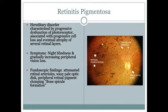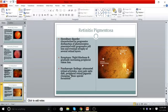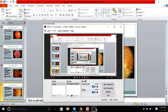The pigment clumping in retinitis pigmentosa is known as bone spicule formation. So the triad is: thin blood vessels, pale optic disc, and clumping of pigment as bone spicule formations. With that, the topic of retina ends. Thank you.